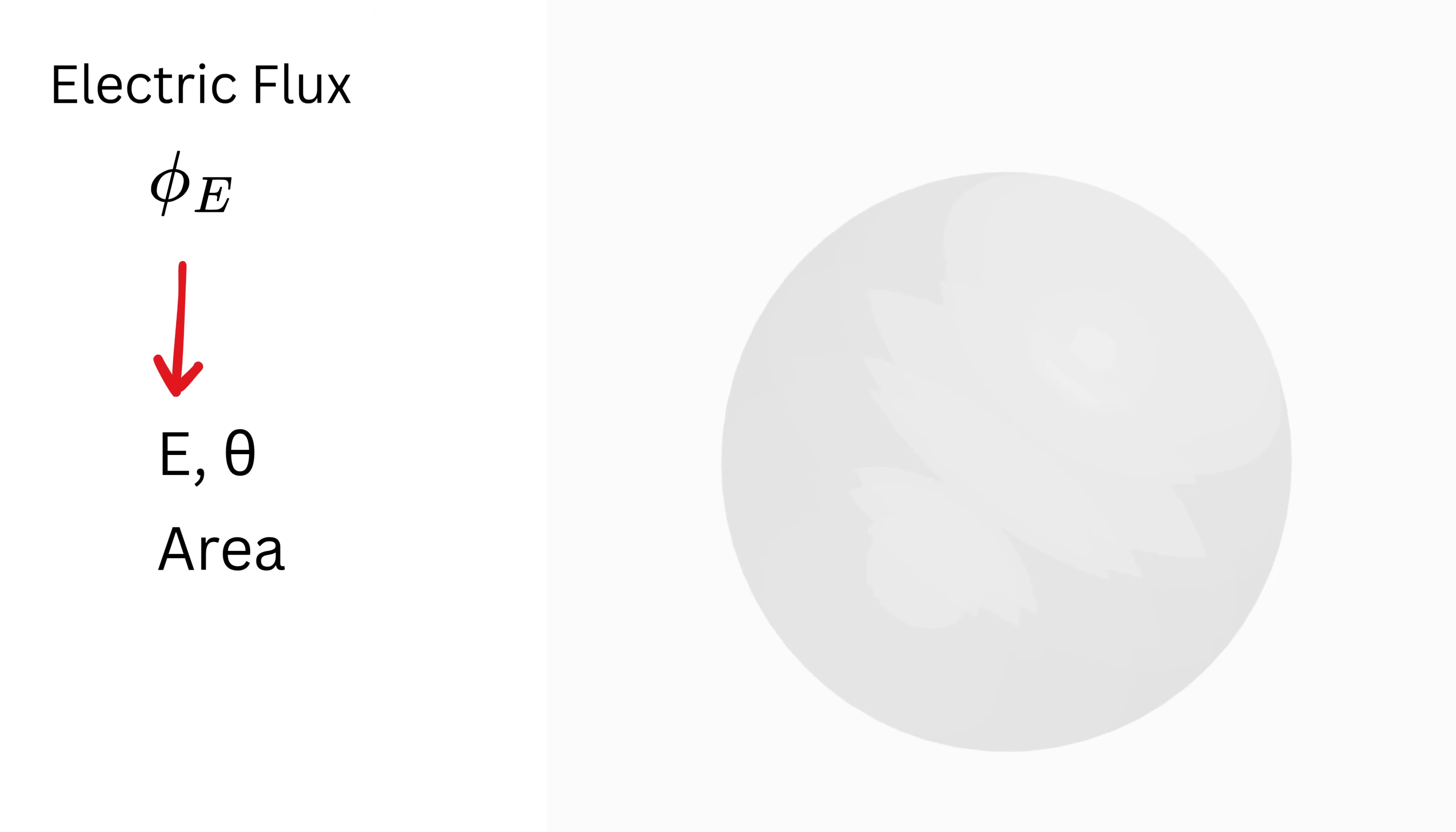Now think of a closed surface like a football surrounding some charges. Electric flux through this surface measures the net number of field lines passing out of this surface. If more arrows leave the football than the ones that enter it, we say the flux is positive. If more arrows enter than leave the surface, we say the flux is negative.